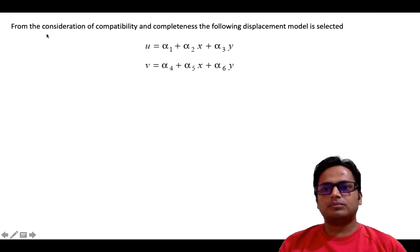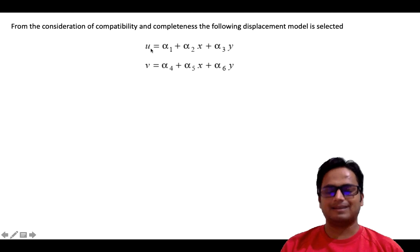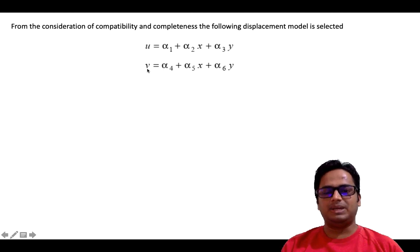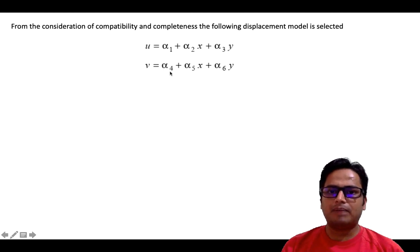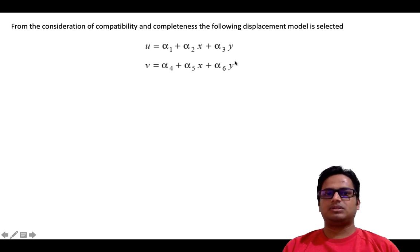From the consideration of compatibility and completeness, the following displacement model is selected: U equals alpha1 plus alpha2·x plus alpha3·y, and V, the vertical displacement, is given by alpha4 plus alpha5·x plus alpha6·y. These are the two assumed solutions U and V.